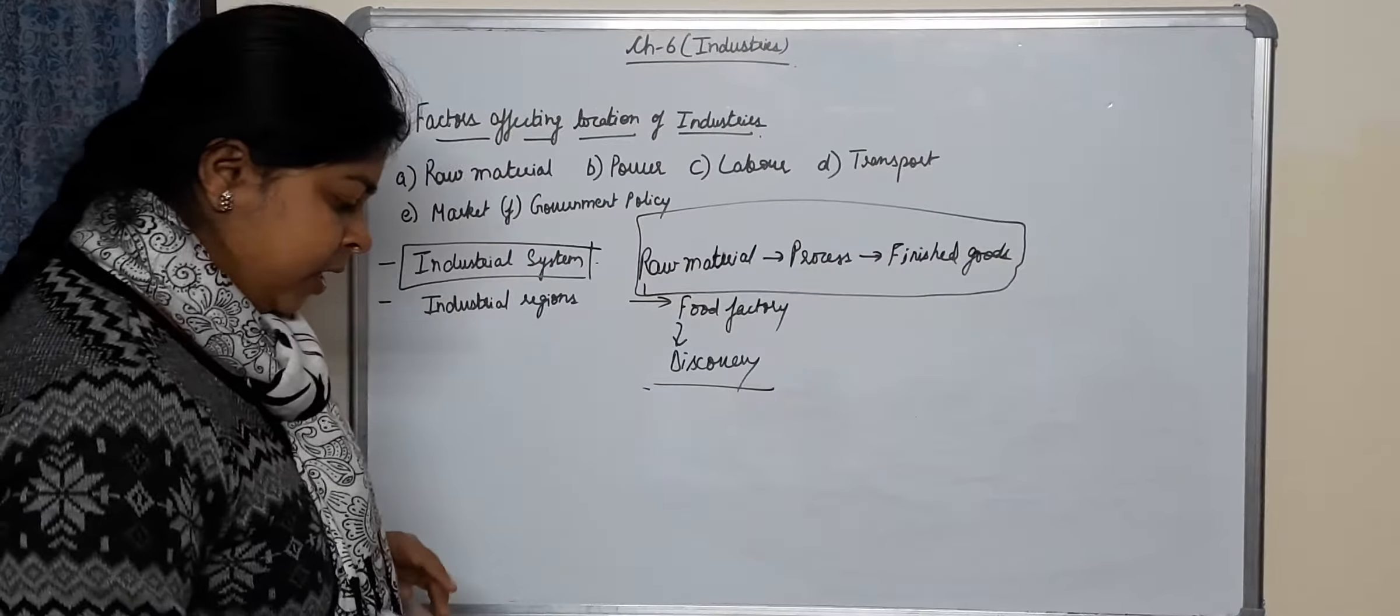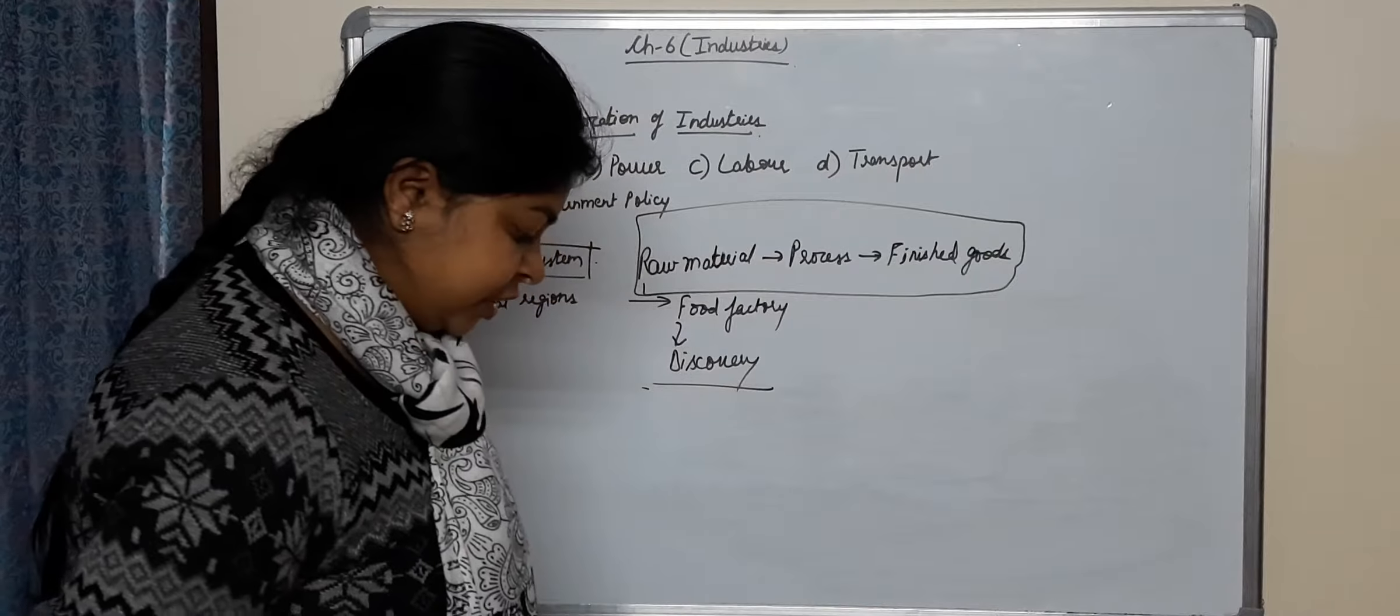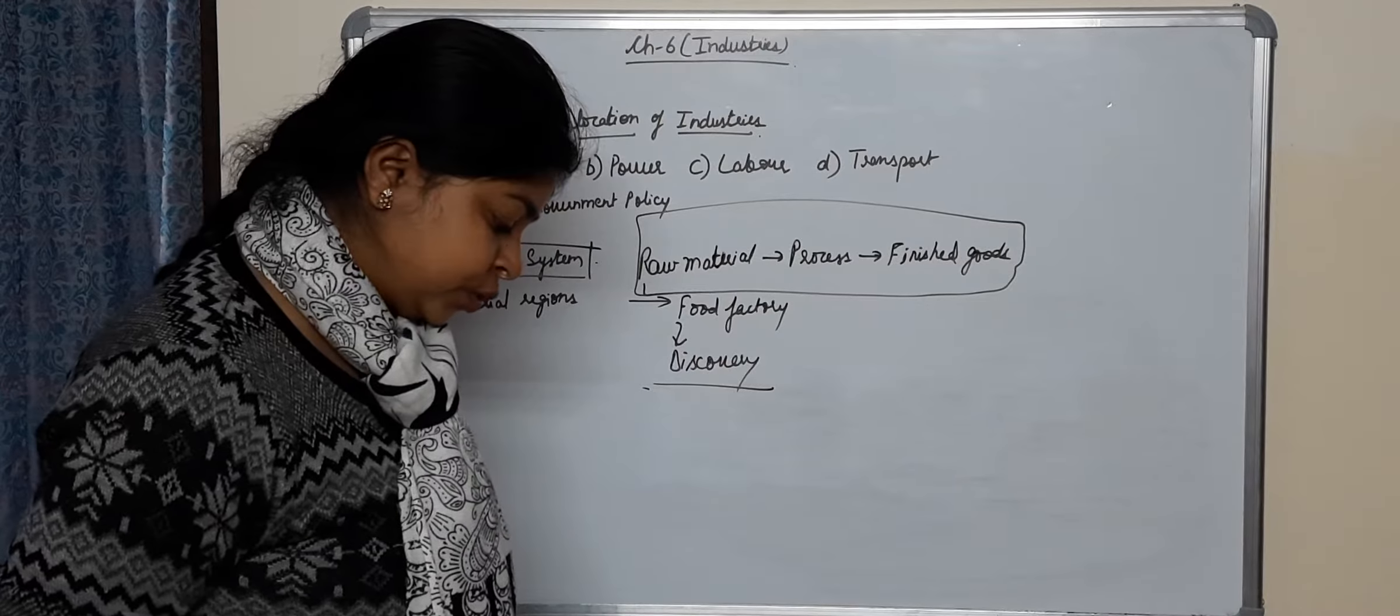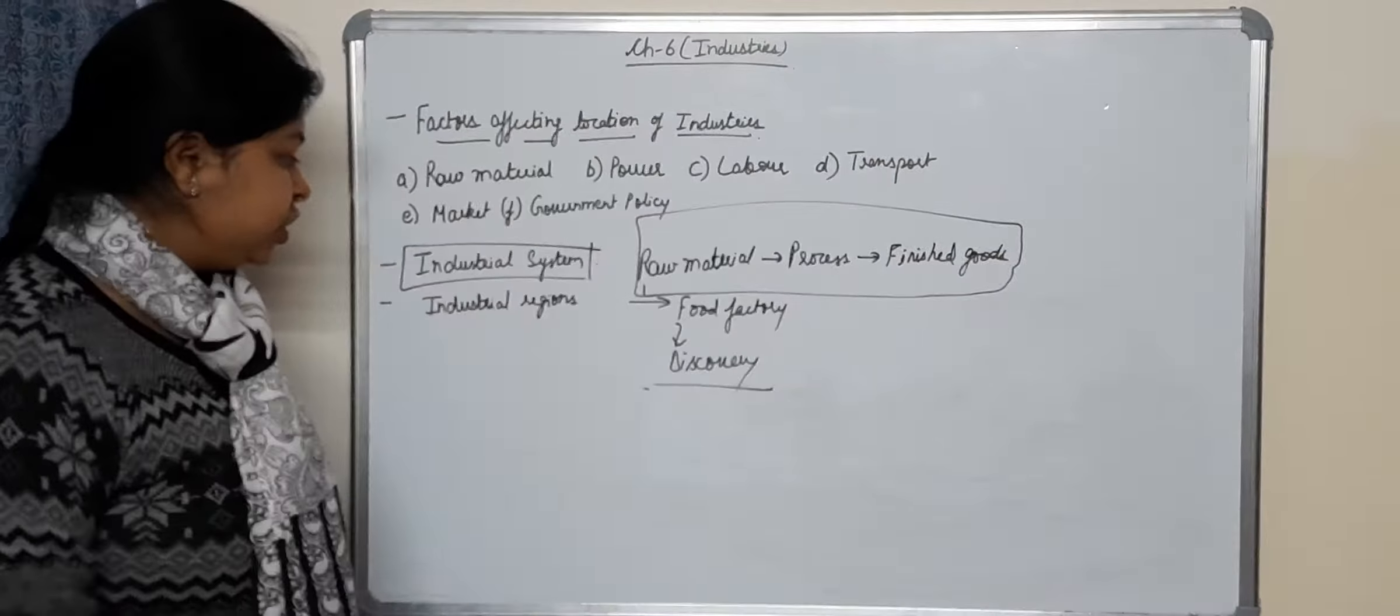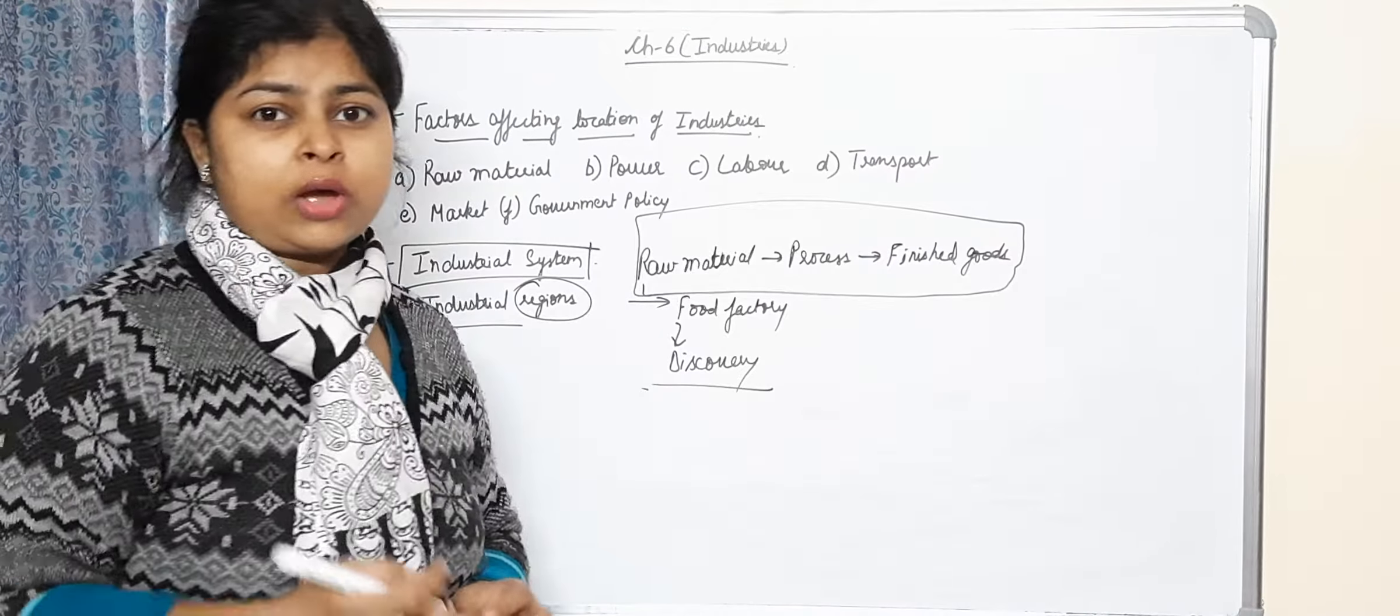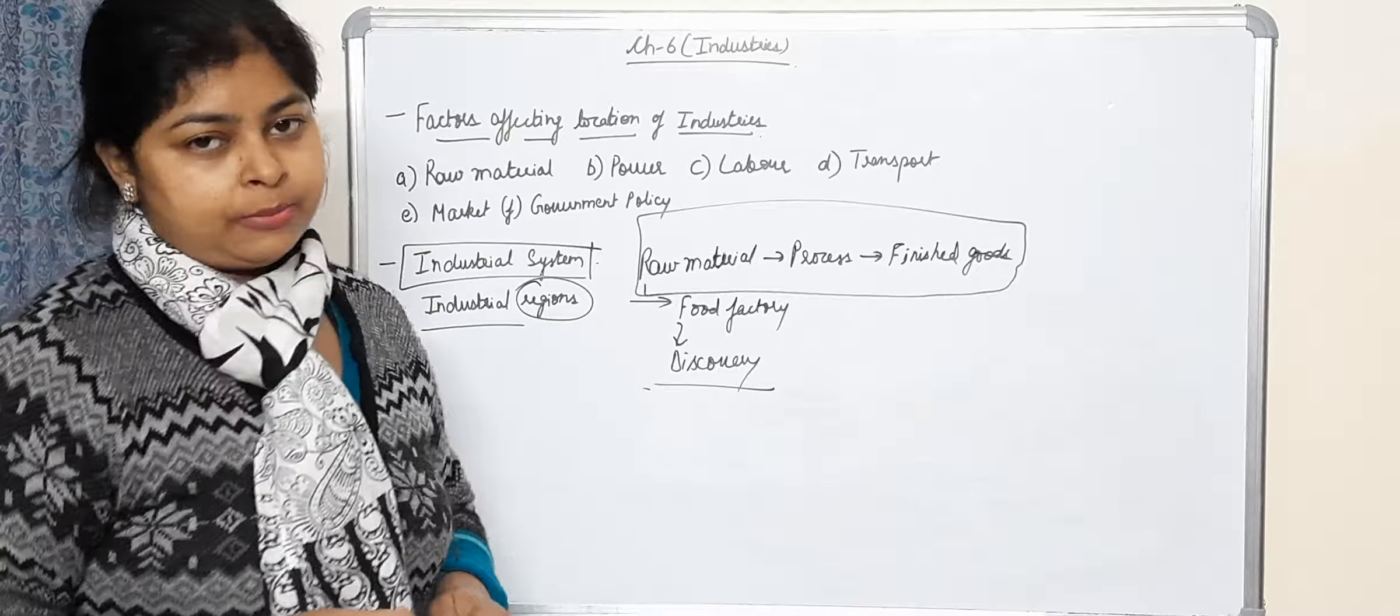I have explained to you what is industrial system. Next we have industrial region, page 163. Industrial regions develop when a large number of industries are located close to each other in a select area. It's a hub. Bangalore is considered as IT hub of our country.